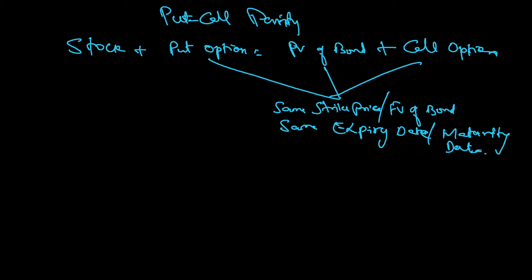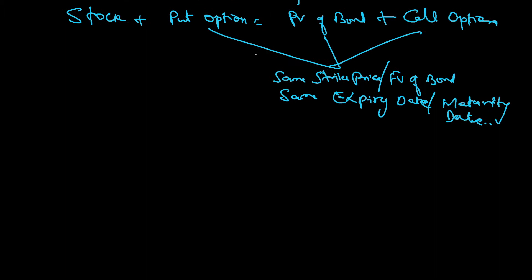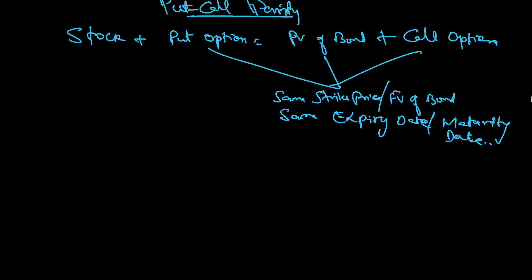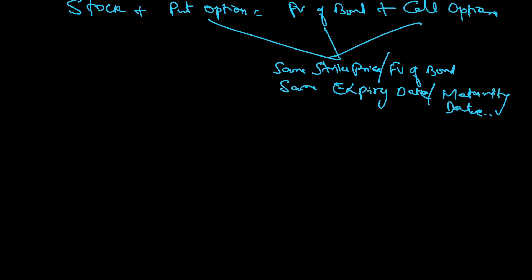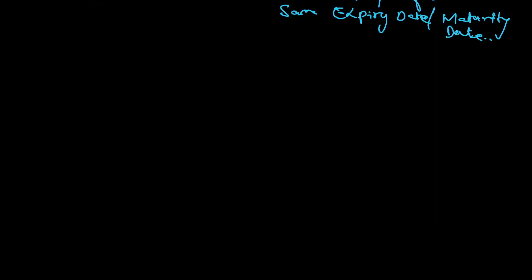Let's do one simple example and this formula will become clear — why the formula is structured this way. So let's say we have a stock, a put option, the present value of a bond, and a call option.